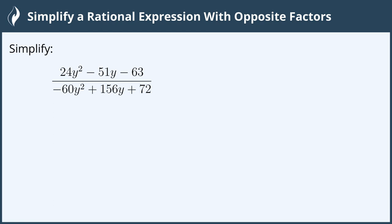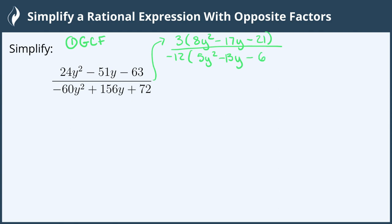The first thing we want to do is factor both the numerator and the denominator, and the very first thing we always look for is a greatest common factor. The numerator has a greatest common factor of 3. If we take out a 3 we're left with 8y squared minus 17y minus 21, and in the denominator all of these terms have a greatest common factor of negative 12, leaving us with positive 5y squared minus 13y minus 6.